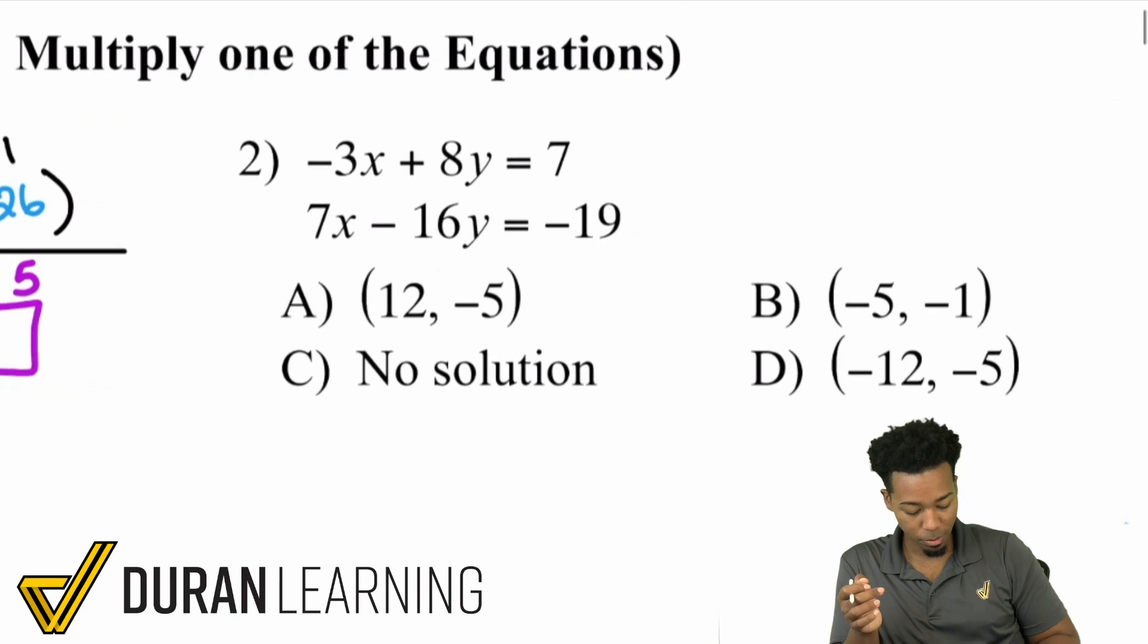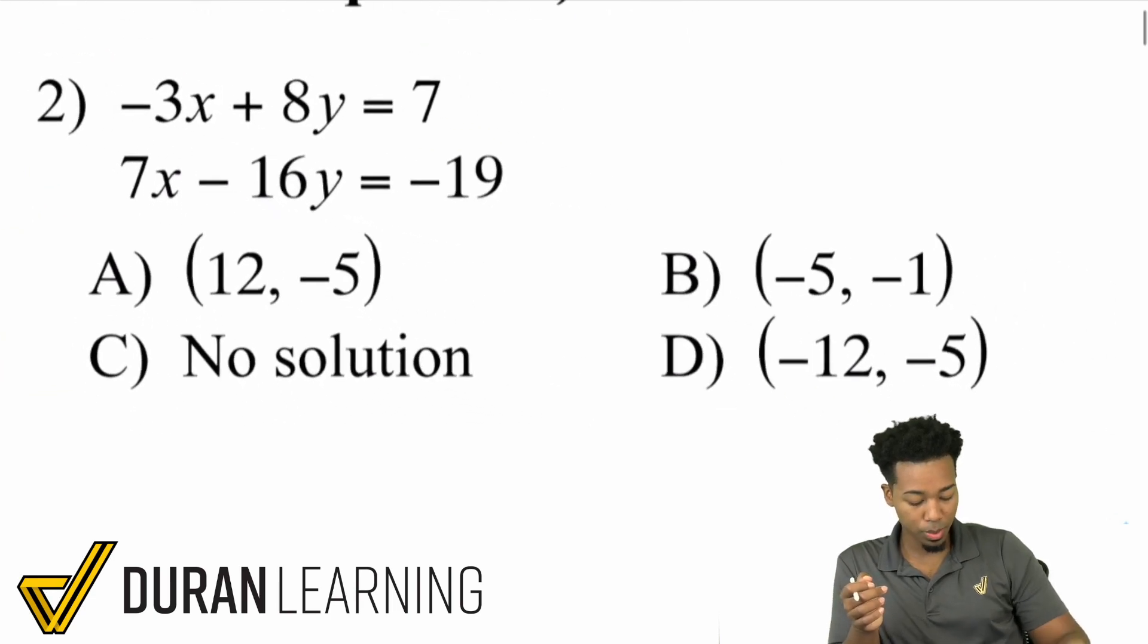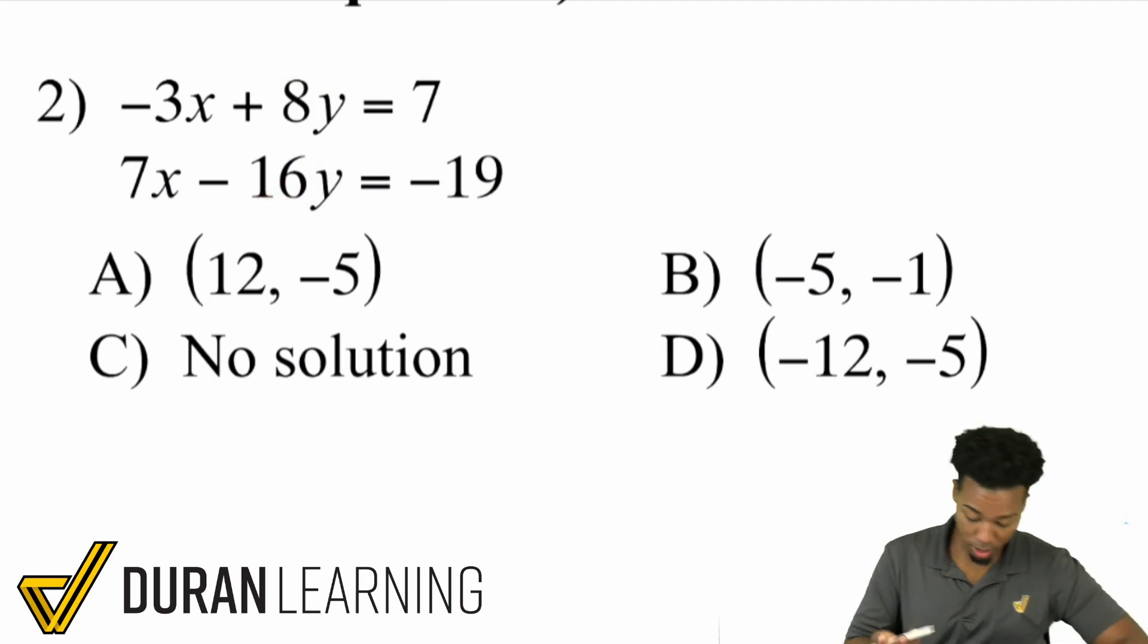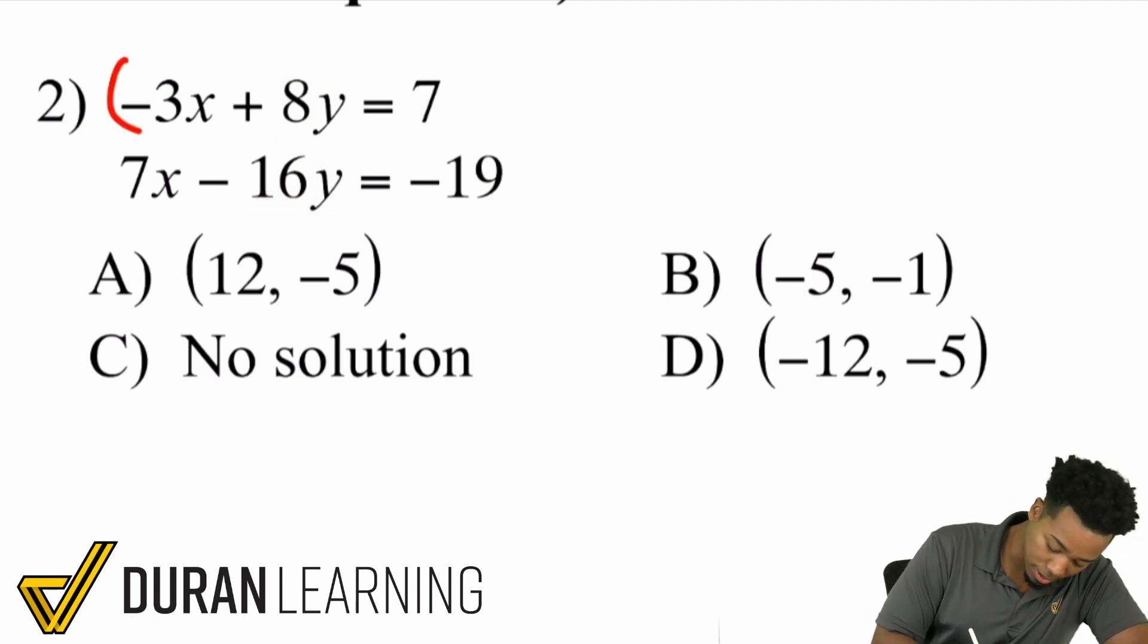Let's take a look at number two. We have 3x plus 8y equals 7, 7x minus 16y equals negative 19. Notice that if I look at the 8 and the 16, I can turn that 8 into a 16 if I multiply by what? 2. So let's go ahead and do that. Let me multiply the entire equation by 2.